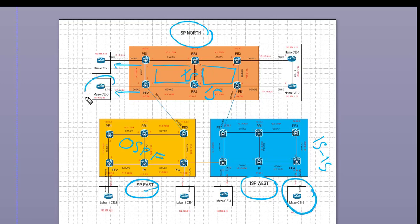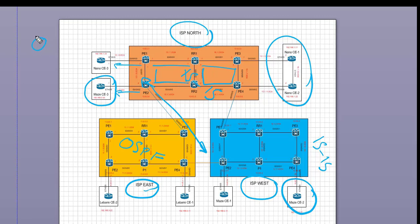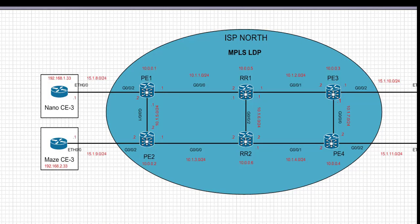Once we're ready for BGP and Layer 2/Layer 3 VPN services, we're going to leverage the CEs later on. We have customers connected, and we're going to demonstrate Layer 2 and Layer 3 VPNs, then use inter-provider VPN between ISP North, West, and East. As we go through the series, we'll cover segment routing, IS-IS, all Layer 3 VPNs, Layer 2 VPN, and all ISP technologies using IOS XR. Today's focus is building MPLS LDP in ISP North.